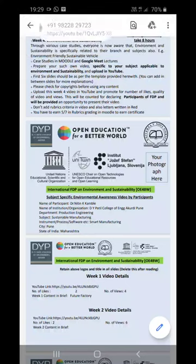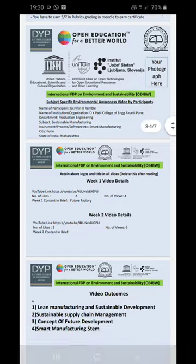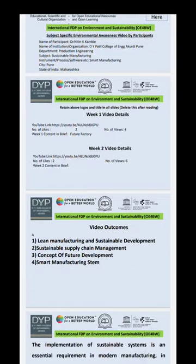I am going to explain the concept of sustainable smart manufacturing system. In this video, the outcomes are lean manufacturing and sustainable development, sustainable supply chain management, and the concept of future development and smart manufacturing system.